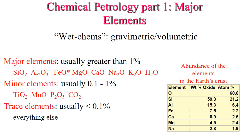When we define major elements, we're defining a major element as any element that is usually greater than 1% of the total volume of the rock. These elements are going to include silica, aluminum, iron, magnesium, calcium, sodium, potassium, and water.